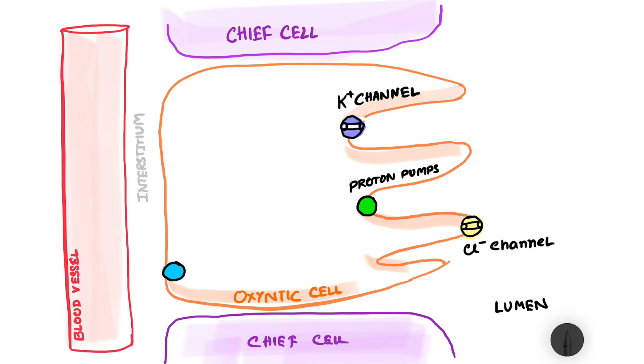And on the basal side of the membrane of oxentic cell which faces the interstitium we have the presence of a bicarbonate chloride antiporter.